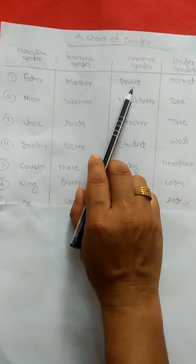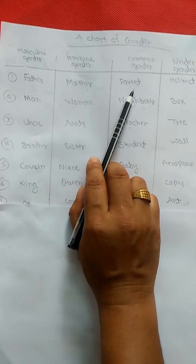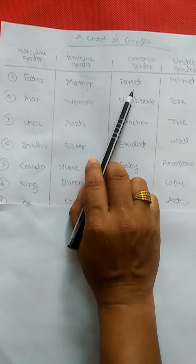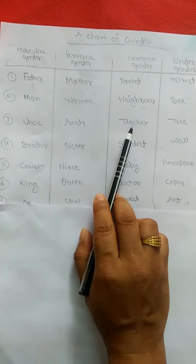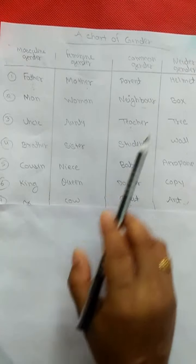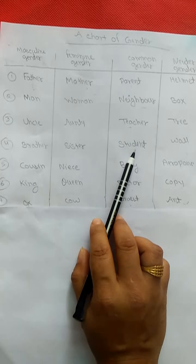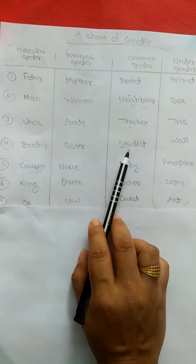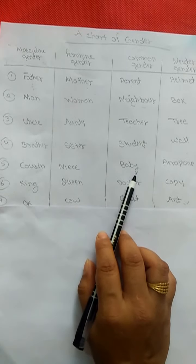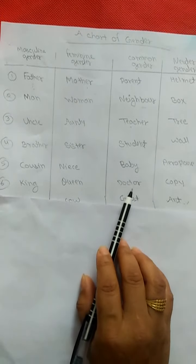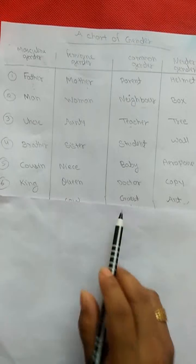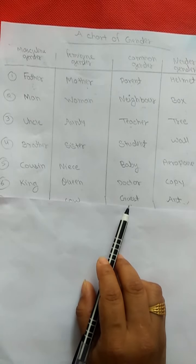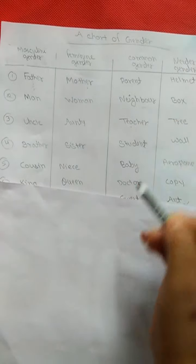In parent, both mother and father will come. In neighbor, both female and male are included. Teacher can be gents or ladies. Student — in school, both girls and boys are studying but we call them students, so students come in common gender. Baby girl and baby boy come in common gender. Doctor — you have seen lady doctors and gents doctors, so doctor comes in common gender. Guest will also be female or male, so these all come in common gender.